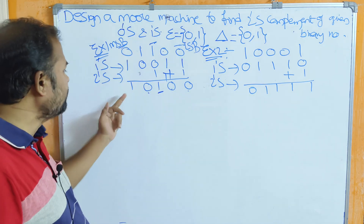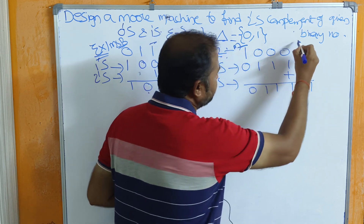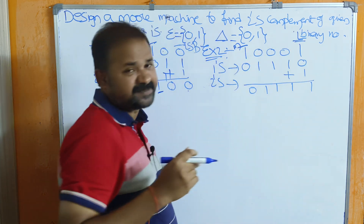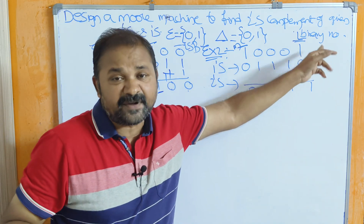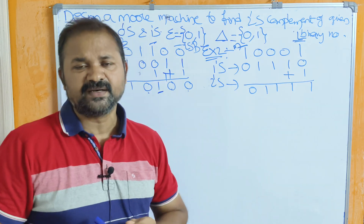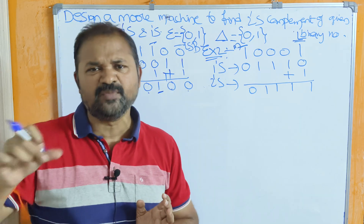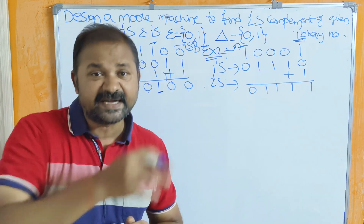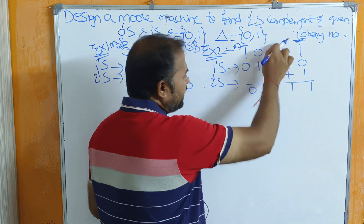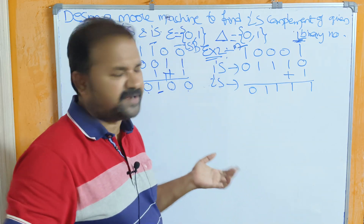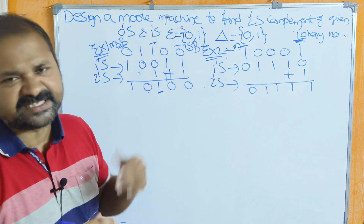The logic is very simple: up to the first 1, keep the bits the same. So 0 stays 0, 1 stays 1. After the first 1, complement the remaining bits. So 0 becomes 1, 1 becomes 0. Applying this to example 2 from the LSB: keep 1, then complement 0→1, 0→1, 0→1, 1→0.